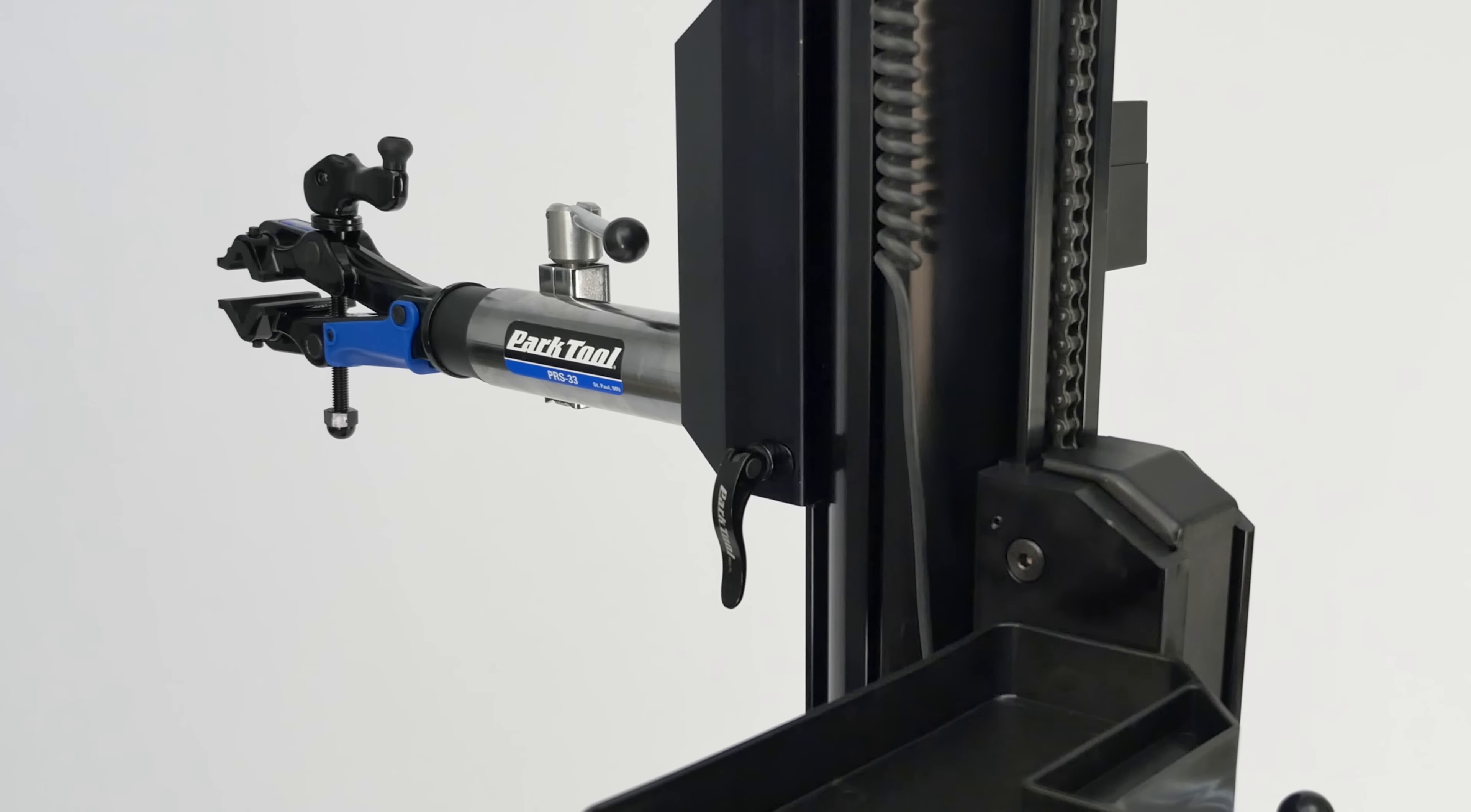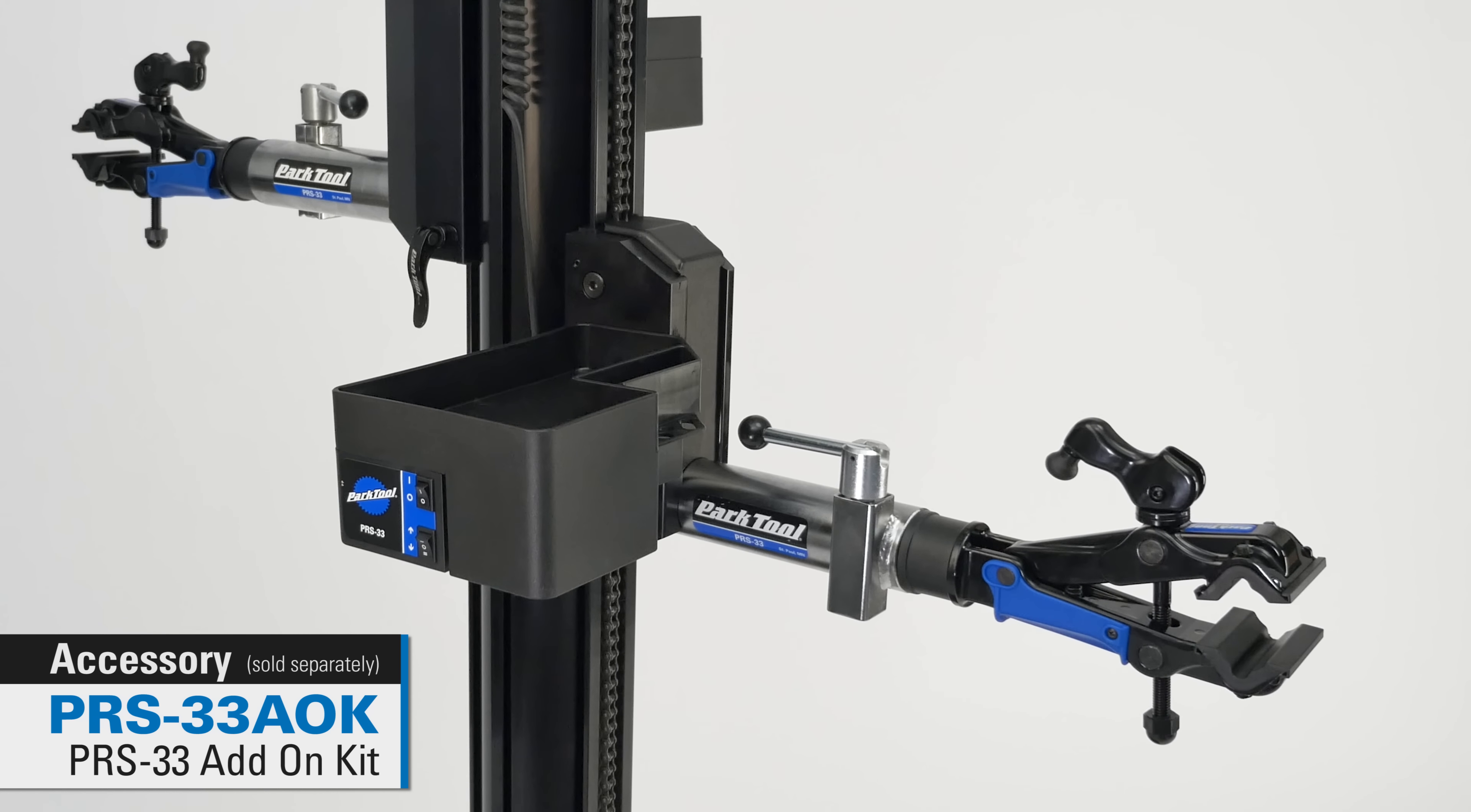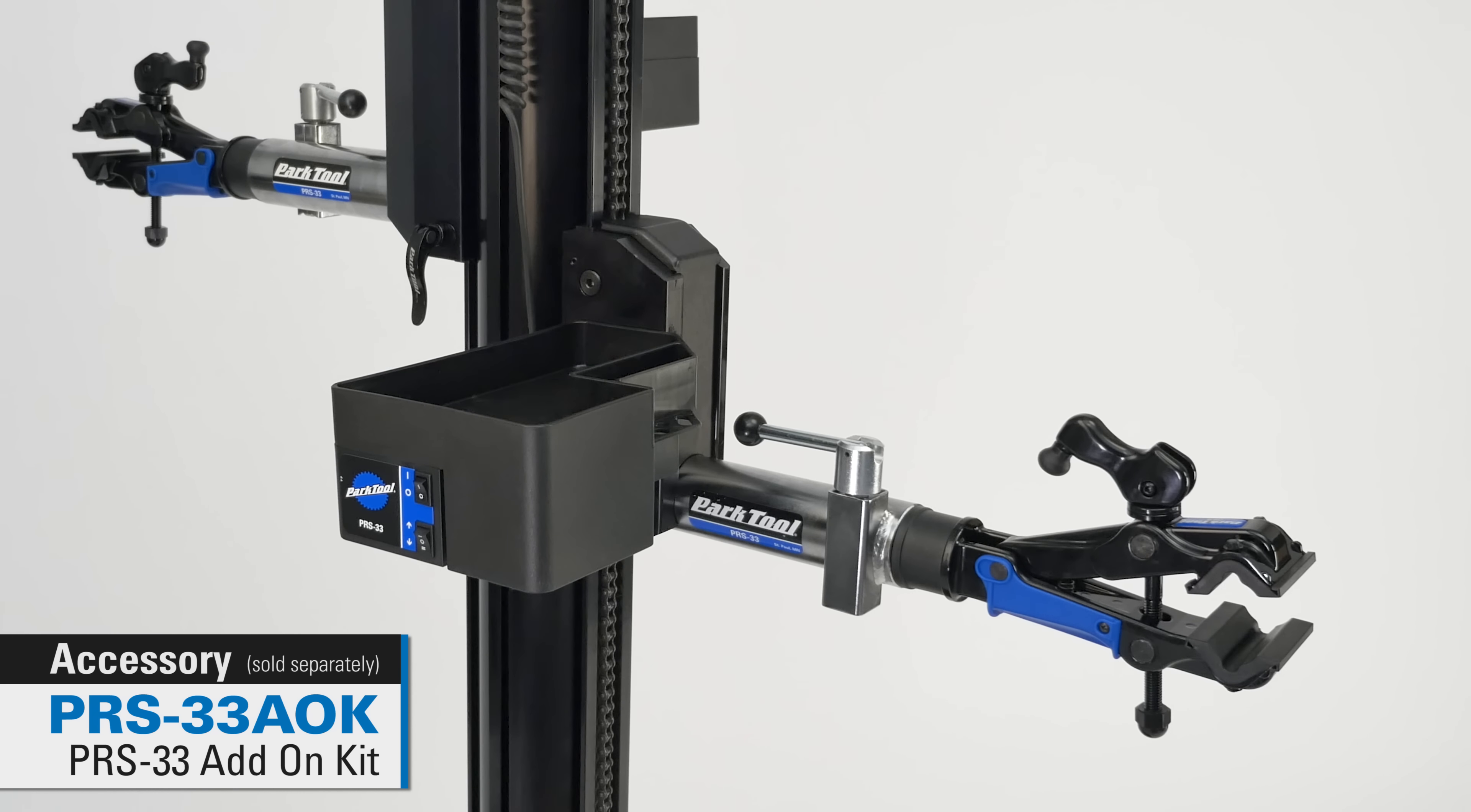The PRS-33 is a single arm repair stand, but can be made into a double arm stand with the addition of part number PRS-33 AOK.